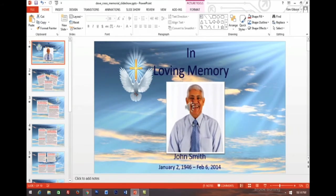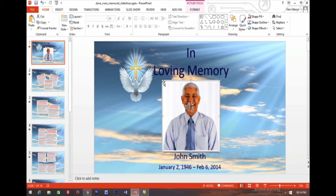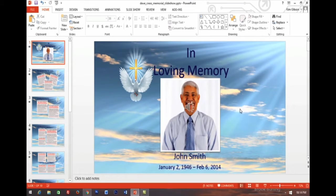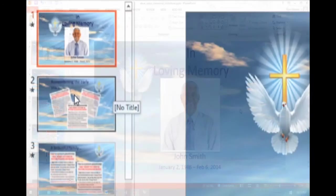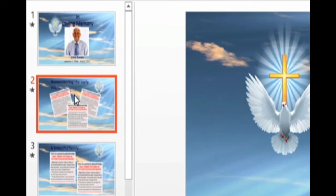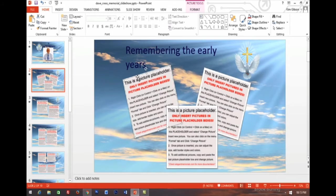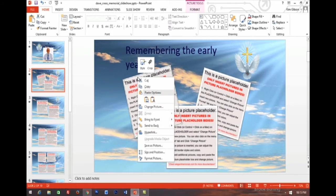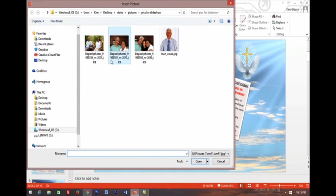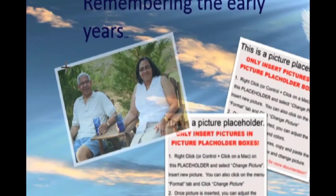Then you can move the picture or resize it by clicking and dragging a corner handle. Remember, only use existing picture placeholders so animations and transitions work correctly. We'll choose another slide to make it active by clicking the thumbnail. Again, click on a picture placeholder to select it, then right-click or command-click on a Mac and choose Change Picture.